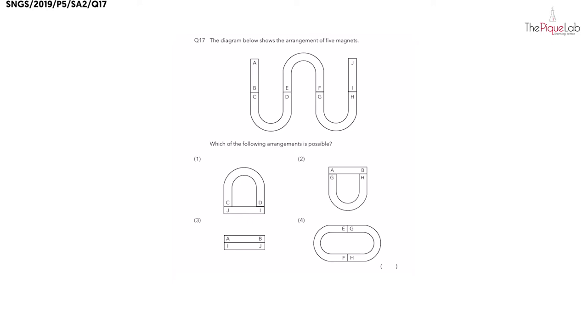Question 17: The diagram below shows the arrangement of five magnets. Let's focus on this bar magnet here and this u-shaped magnet over here. I'm going to focus on these two points B and C. Now, since the poles of these two magnets are attracted to each other, what can I say about poles B and C? Are they